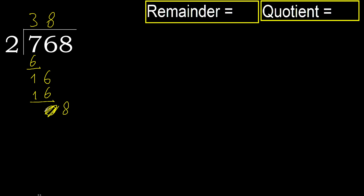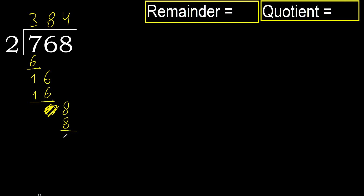Eliminate the 0. Bring down 8. 2 multiplied by 5 is 10 — 10 is greater. Multiplied by 4 is 8 — 8 is not greater. So we subtract: 8 minus 8 is 0.